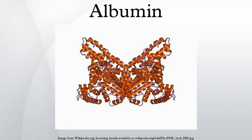Serum albumin is the most abundant blood plasma protein, produced in the liver, and forms a large proportion of all plasma protein. The human version is human serum albumin, and it normally constitutes about 50% of human plasma protein. Serum albumins are important in regulating blood volume by maintaining the oncotic pressure of the blood compartment. They also serve as carriers for molecules of low water solubility, including lipid-soluble hormones, bile salts, unconjugated bilirubin, free fatty acids, calcium ions, and some drugs like warfarin, phenobutazone, clofibrate, and phenytoin. For this reason, it is sometimes referred to as a molecular taxi. Competition between drugs for albumin binding sites may cause drug interactions by increasing the free fraction of one of the drugs, thereby affecting potency.